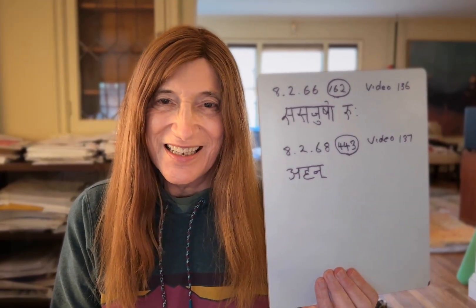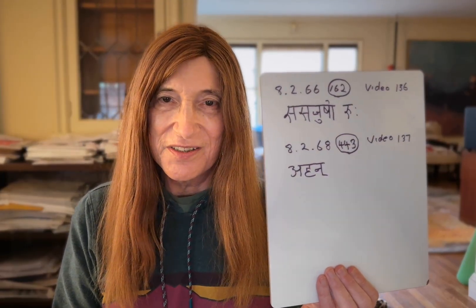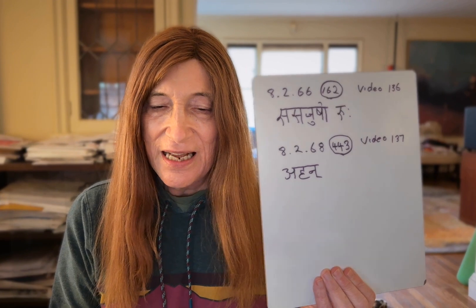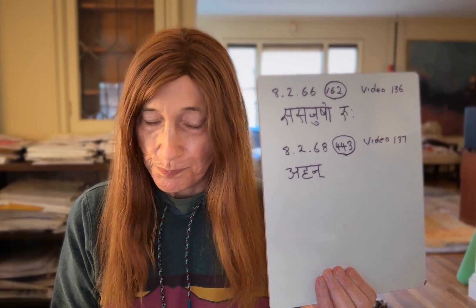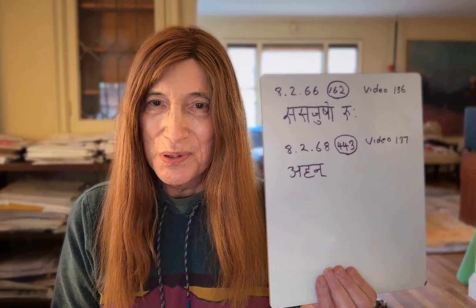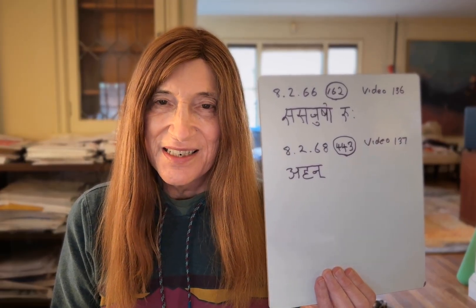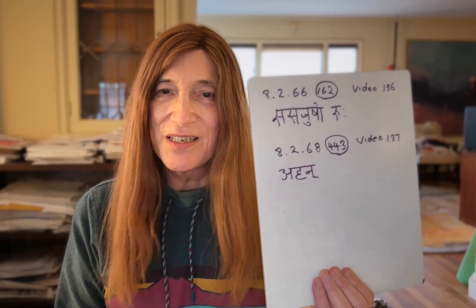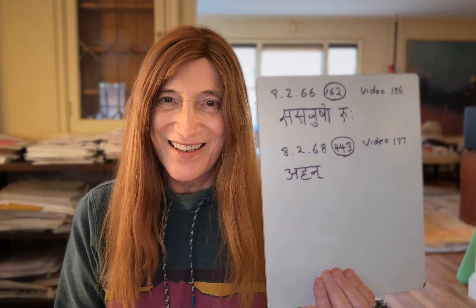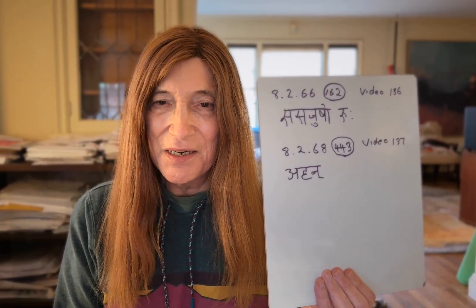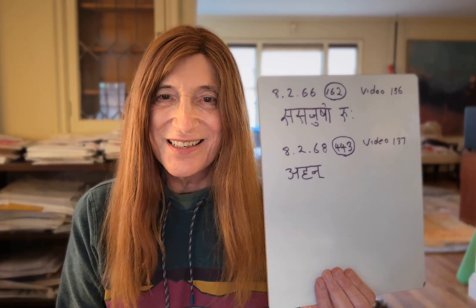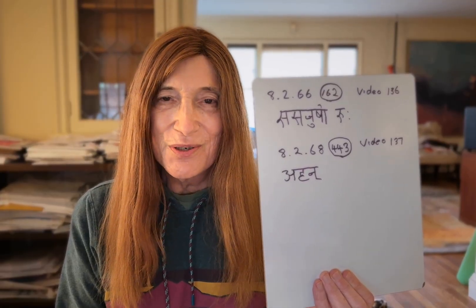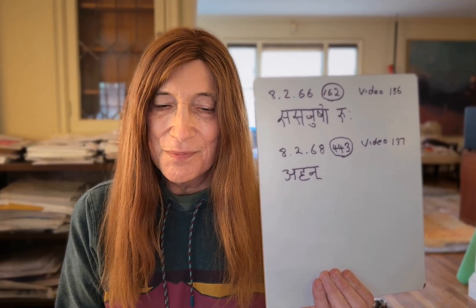Two important salient sutras regarding ru that we've discussed so far are 8.2.66 — number 162 in Siddhanta Kaumudi and video 136 — and the sutra 'sasajushoruhu.' The second is 8.2.68, number 443 in Siddhanta Kaumudi. You can see the costs and benefits of the structure of Siddhanta Kaumudi: these two essentially sequential sutras are separated by about 300 entries.